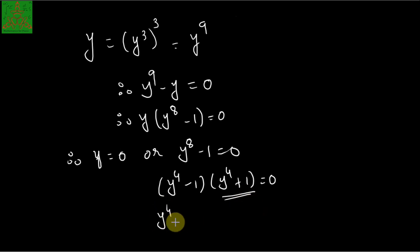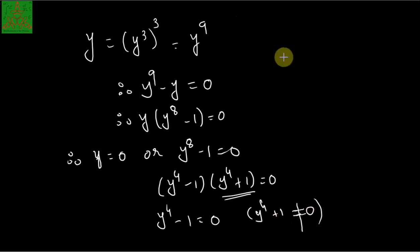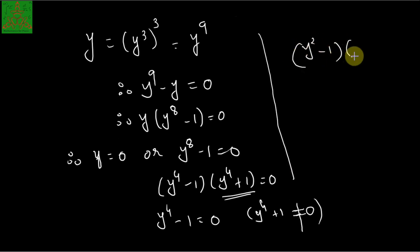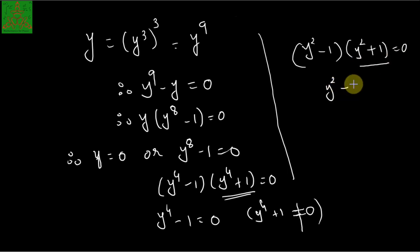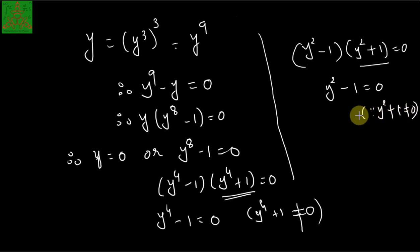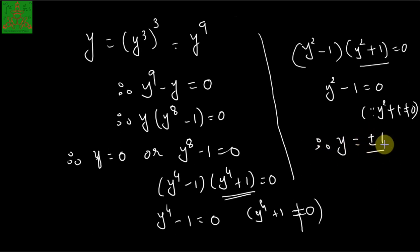So we only consider y to the power 4 minus 1 equal to zero. That factor has two further factors: (y squared minus 1) and (y squared plus 1). Since y squared plus 1 gives complex roots, only y squared minus 1 equal to zero is valid. Since we are working in the real domain, the remaining possibilities are y equal to plus or minus 1.